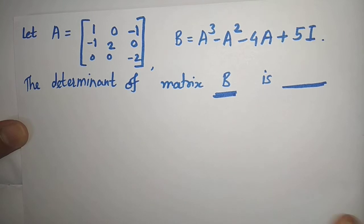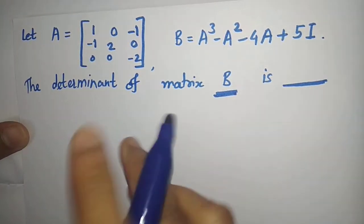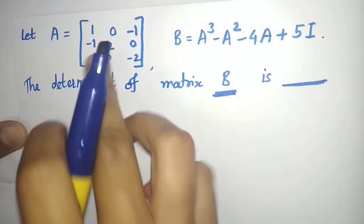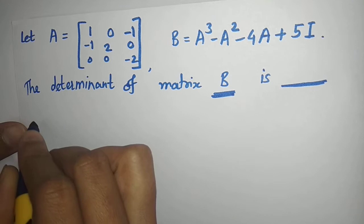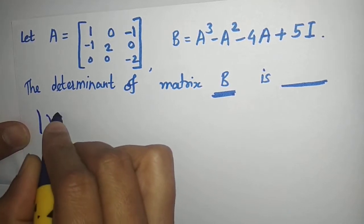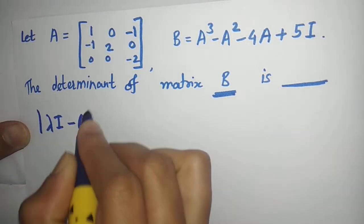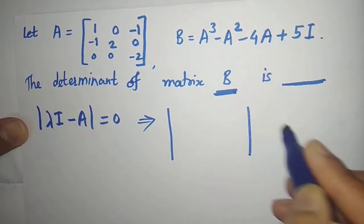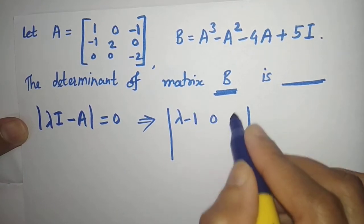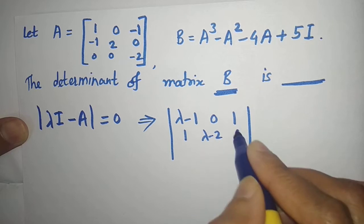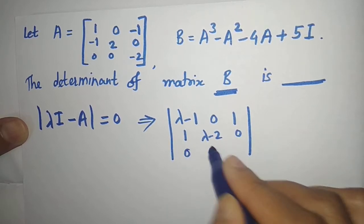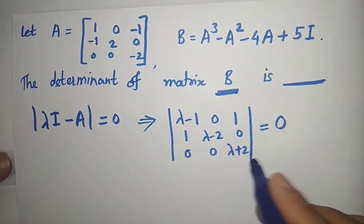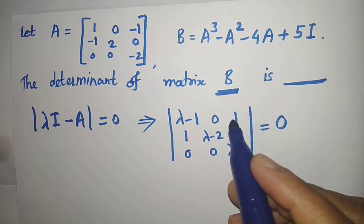By Cayley-Hamilton theorem, every matrix satisfies its own characteristic polynomial. So first we find the characteristic polynomial of A. For that, we calculate det(λI - A) = 0. This gives us the determinant of the matrix with entries (λ-1), 0, 1 in the first row; 1, (λ-2), 0 in the second row; and 0, 0, (λ+2) in the third row, set equal to zero.